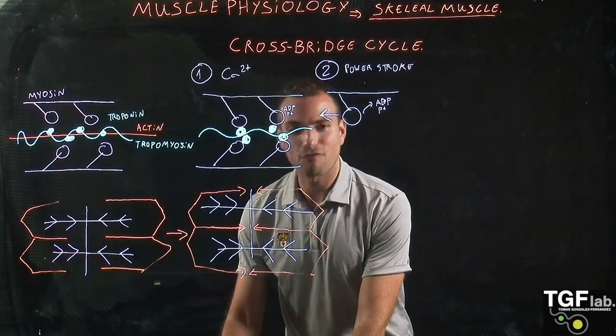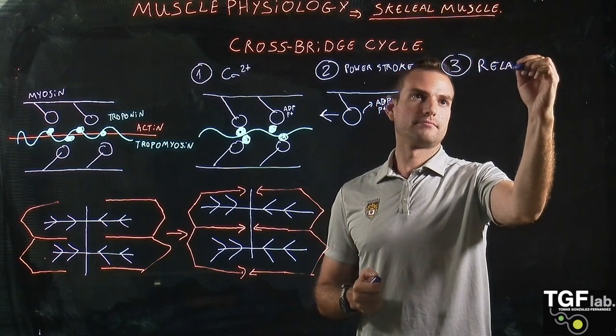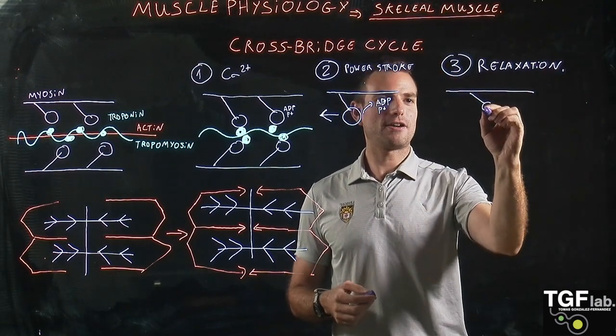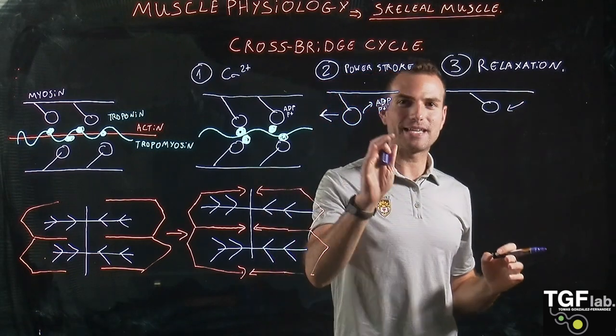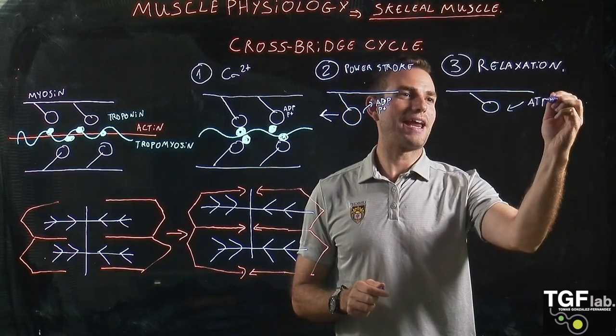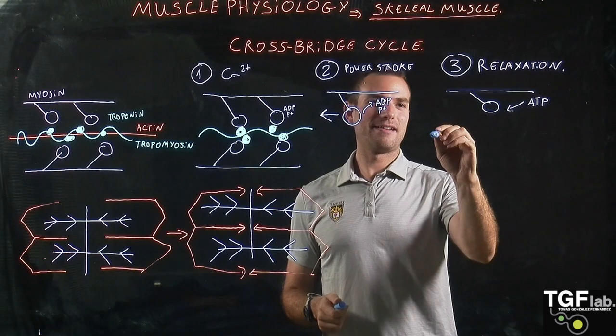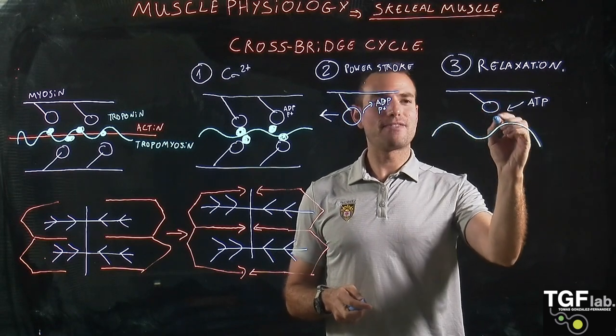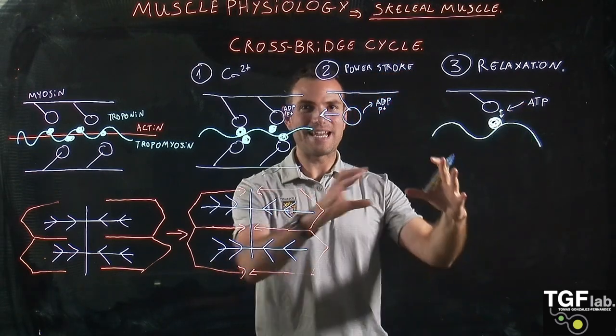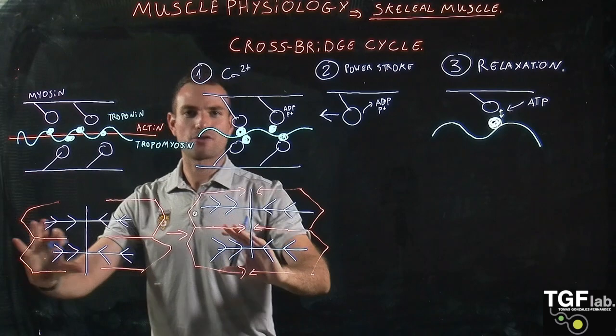And then the last step is the relaxation. So the relaxation happens because here the head of the myosin that was free from the ATP and the phosphate is going to bind to another molecule of ATP. So that's going to produce this conformational change again. And then the head of the myosin and the troponin are going to be separated again. So this allows for the muscle relaxation and for the sarcomere to go back to its initial conformation in a non-tense way.